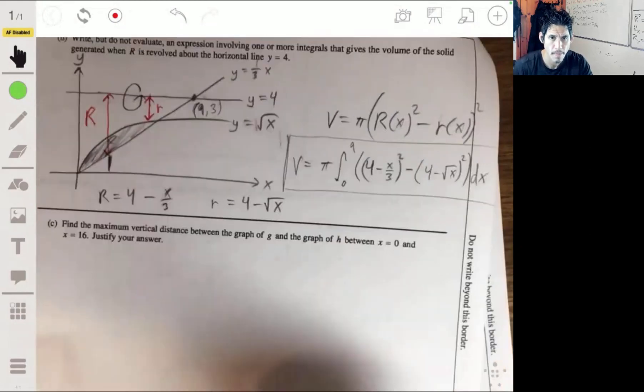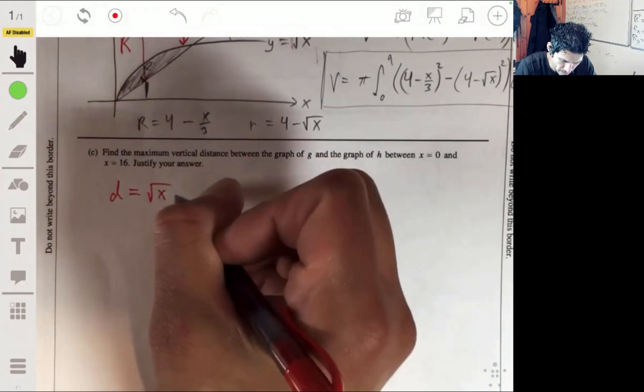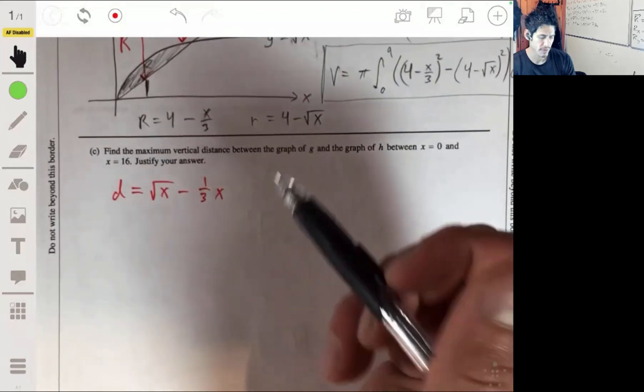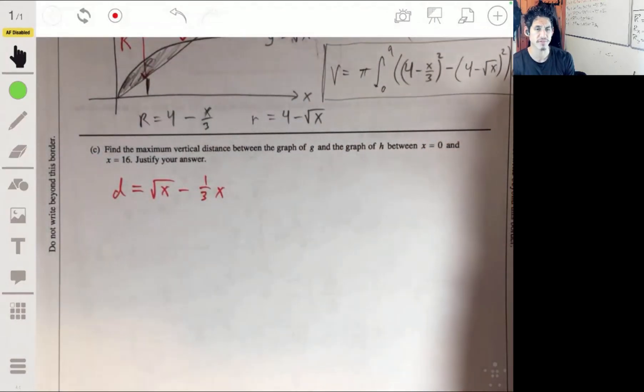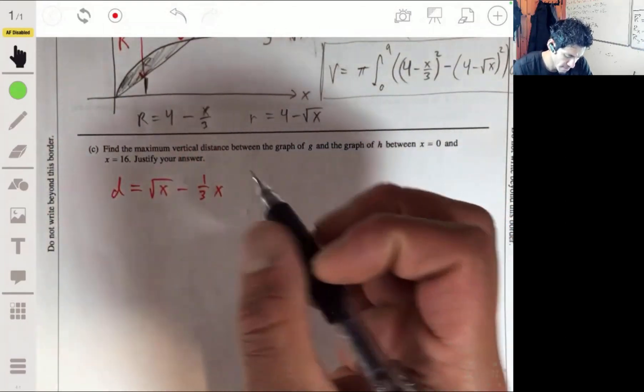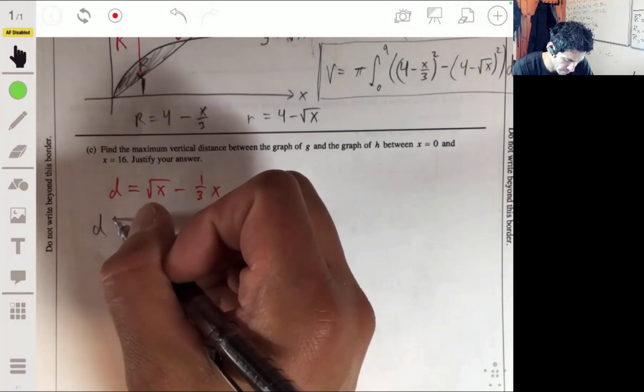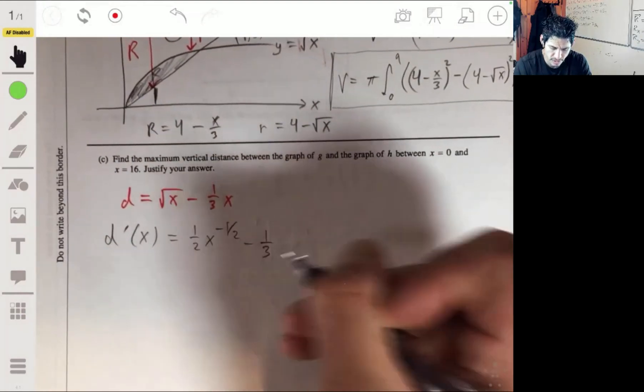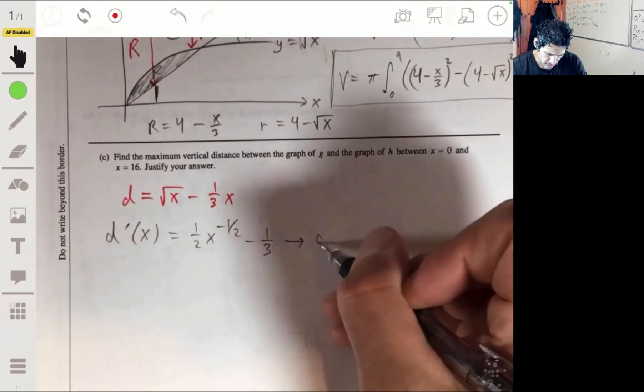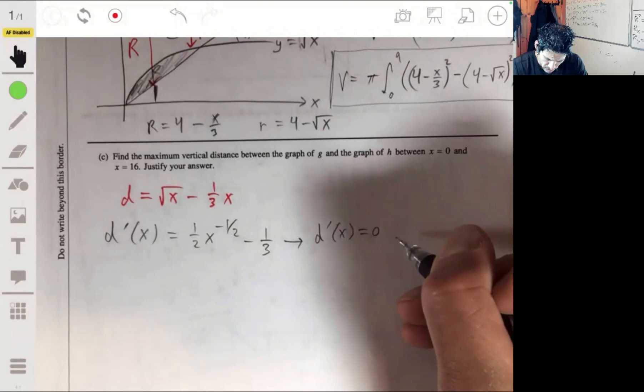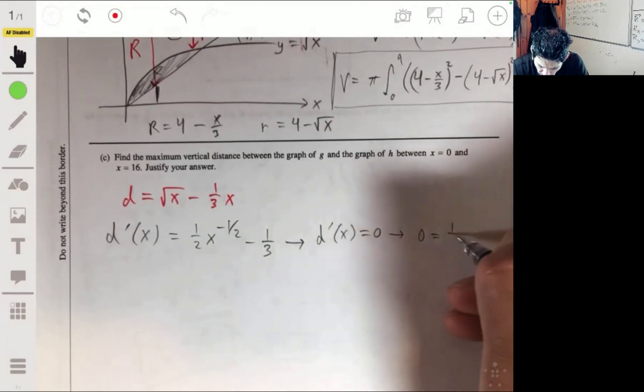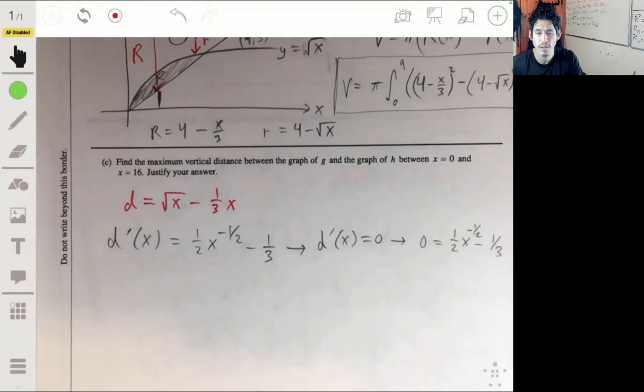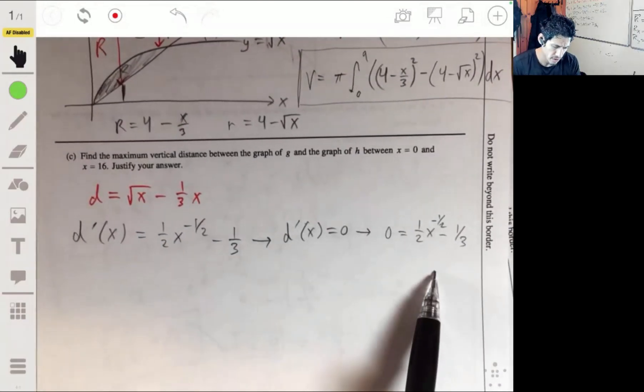So d will then be equal to the square root of x minus 1/3 x. Let's start there. And to understand the behavior of d, we're going to take the derivative, look for the critical points, look for where the derivative is 0, and see what the values are of the distance. Then we can get an idea of when it's largest. Taking this derivative, we'll have d prime of x be 1/2 times x to the negative 1/2 minus 1/3. Set this equal to 0.